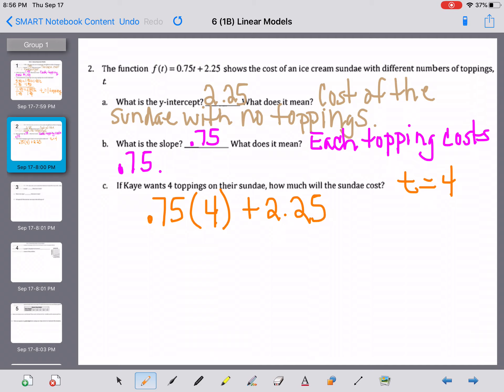And when we do the math here, 0.75 times four. And by the way, if you type that whole thing in, 0.75 times four plus 2.25 into Desmos, it will give you the answer. If you're doing it like I am, 0.75 times four is three plus 2.25. So the sundae is going to cost $5.25.